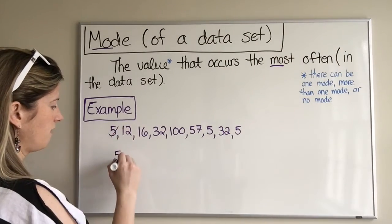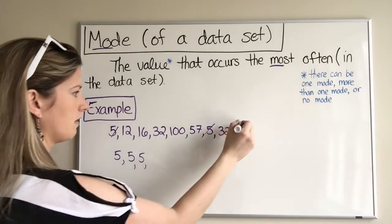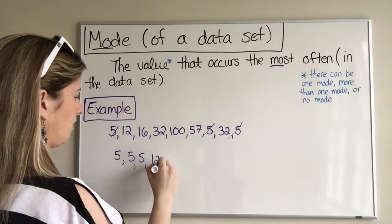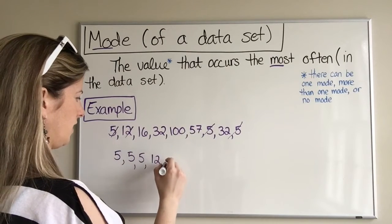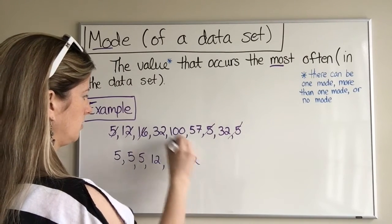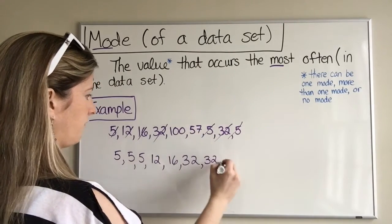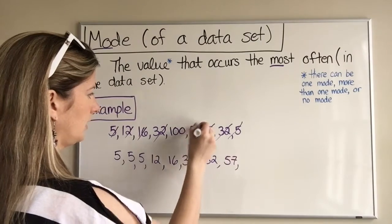So we've got a 5, another 5, and a third 5, then a 12, then a 16, then a 32 and another 32, and a 57, and a 100.